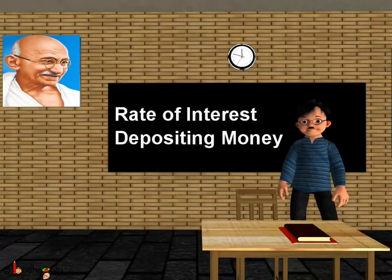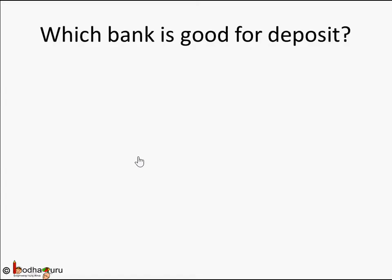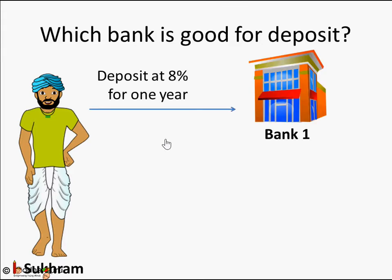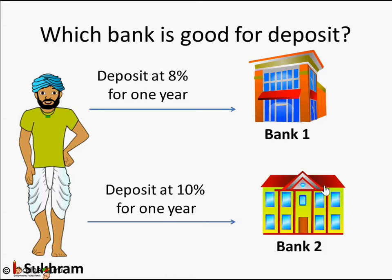Hello friends. In this lesson we are going to learn how to compare rate of interest when you are depositing money — which bank is good for deposit. Let's take our example: Sukram is a farmer. He had a good crop and wants to deposit 10,000 rupees as a fixed deposit in the bank for one year. This is his surplus money, and he says the bank can give him interest so his money increases. So he approaches 2 banks.